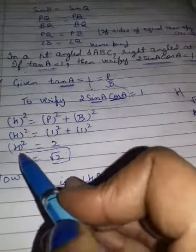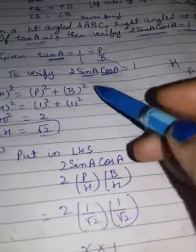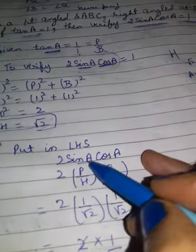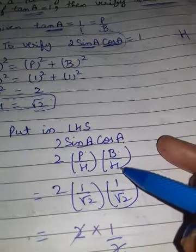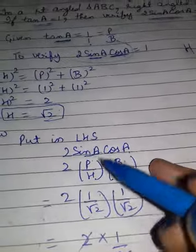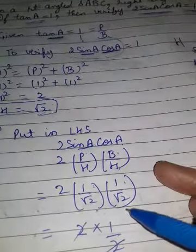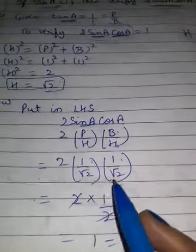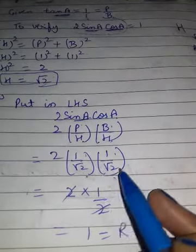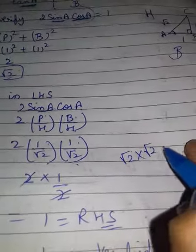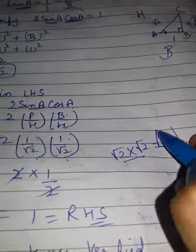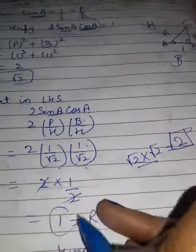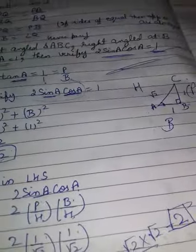P and B are both 1. After putting into Pythagoras theorem you get H equals root 2. Now sin A equals perpendicular upon hypotenuse which is 1 upon root 2, and cos A equals base upon hypotenuse which is also 1 upon root 2. You know both terms have square roots — root 2 times root 2 gives 2, and 2 cancels with 2, leaving 1. So the answer is 1, which equals the right hand side. Hence proved.